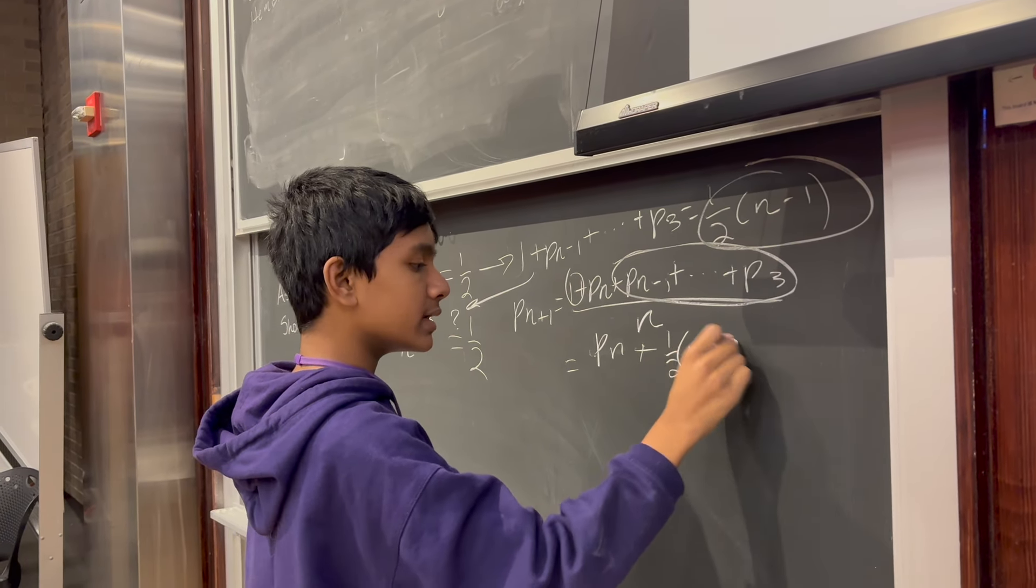Pn plus 1 half n minus 1 divided by n. And of course, we've already assumed Pn is 1 half. So we have 1 half plus 1 half n minus 1 half divided by n. So we cancel these out. And indeed, we get that Pn plus 1 is 1 half. So we've proved that Pn is equal to 1 half for all n.